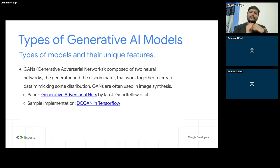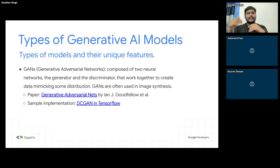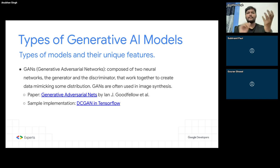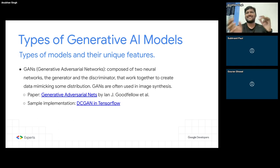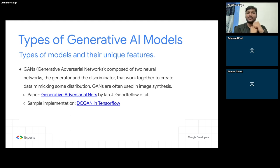Eventually the generator learns how to generate good fake images that the discriminator cannot tell are correct or wrong. Think about a dartboard — every time you throw a dart, the distance from the center is measured. First time it's 30 centimeters away, next time 20, then 10, and finally you learn how to hit the center. The same happens between the generator and discriminator: if instead of a dog, the generator produces a laptop image, that's very bad; if it produces another four-legged animal like a cow, it's slightly closer. Eventually it will learn how to generate good images of dogs.